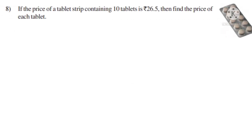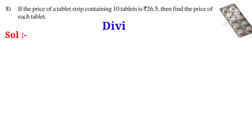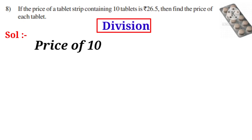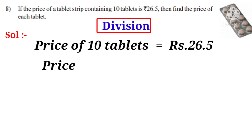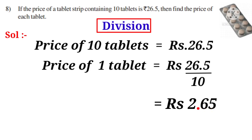Last problem: If the price of a tablet strip containing 10 tablets is 26.50, find the price of each tablet. Solution: Each tablet means 1 tablet; number of tablets decreased from 10 to 1, so the operation is division. Price of 10 tablets is 26.55. Price of 1 tablet equals 26.55 by 10. Observe that there is only one zero in the denominator, so the decimal point in the numerator will shift left side after one digit. It becomes 2.65 rupees is the price of one tablet. Thanks for watching — don't forget to subscribe.